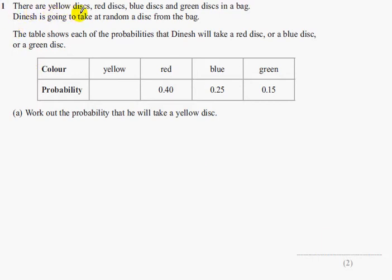Question 1. There are yellow discs, red discs, blue discs and green discs in a bag. Dinesh is going to take at random a disc from the bag. The table shows each of the probabilities that Dinesh will take a red disc or a blue disc or a green disc.